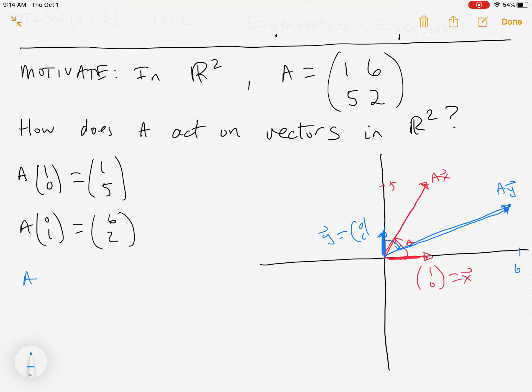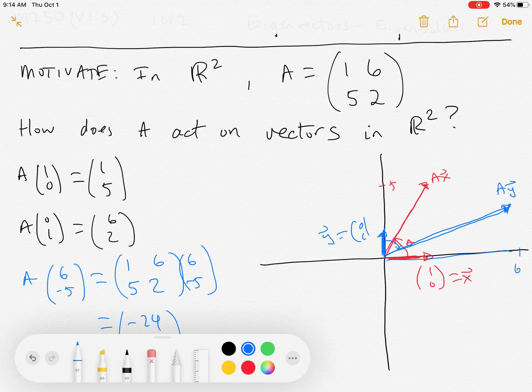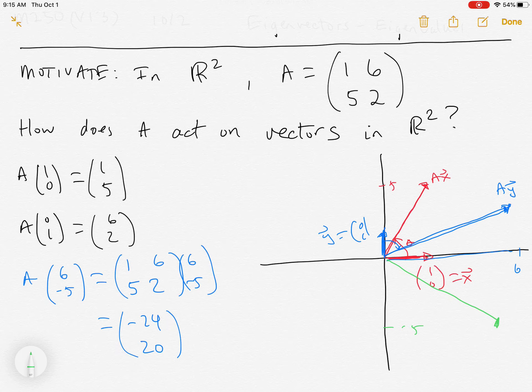Now let's look at A(6, -5), and we have to compute this. This is the matrix (1, 6, 5, 2) times (6, -5), and this equals 6 minus 30, that's -24, and then 30 minus 10 is -20. So out here at (6, -5), this is my vector.